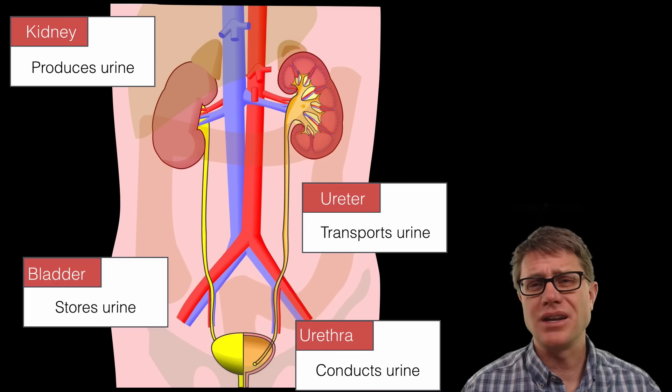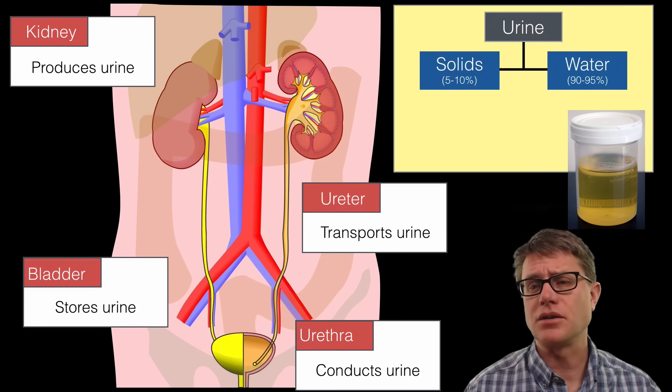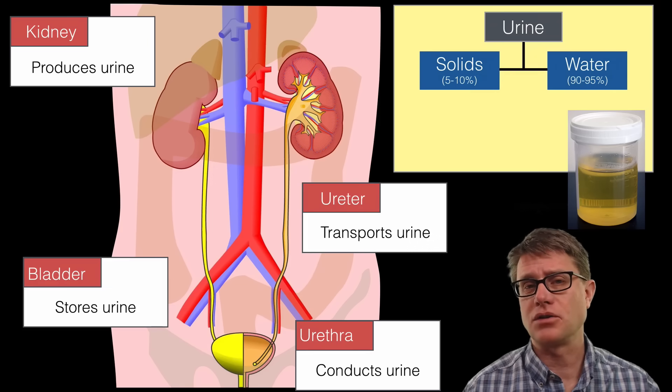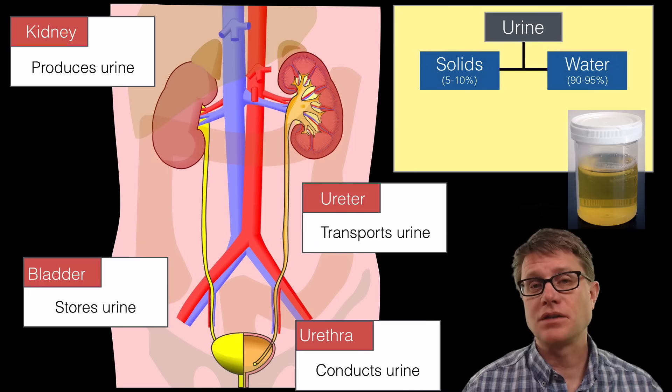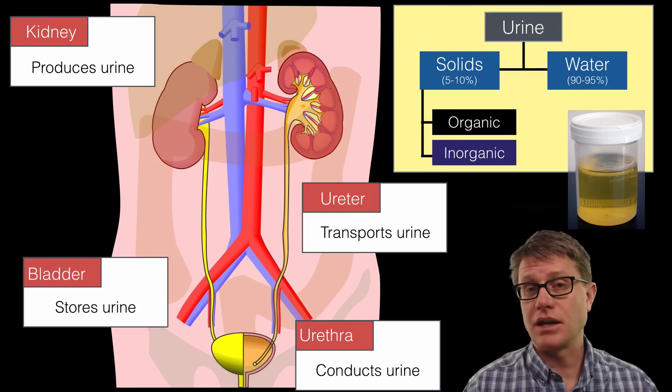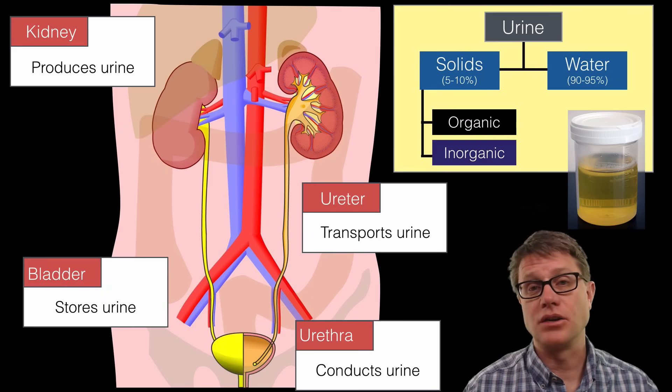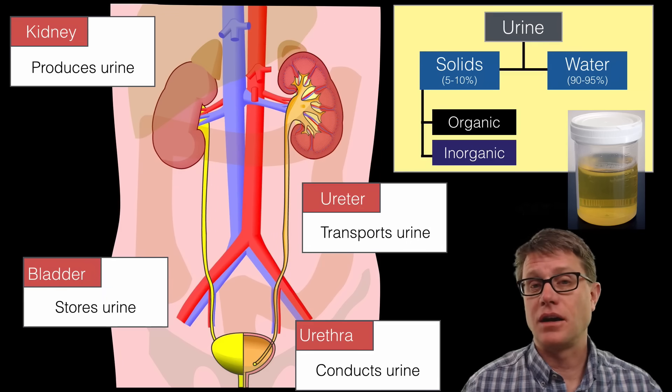You might be thinking, what is urine? Well, urine is mostly water—90 to 95 percent water. But the rest is solid waste, both inorganic and organic. Organic waste like urea and uric acid, and inorganic like toxins and certain salts as well.